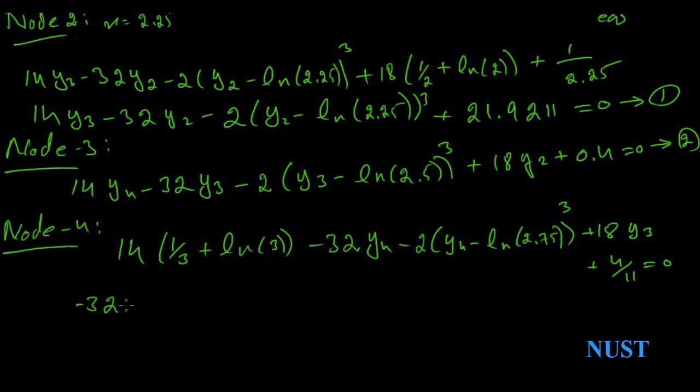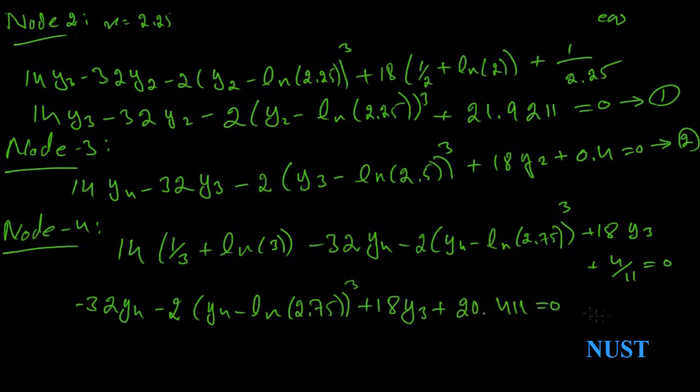If there are three unknown points or nodes, the number of equations must be three at x equal to 2.25, 2.5, and 2.75.